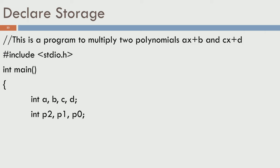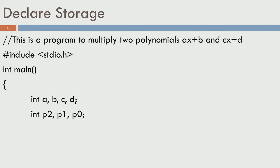I already have a small program written up here. We start with declaration of storage — that is step 1. Ignore the first few lines; you can see there is 'int a, b, c, d' and 'int p2, p1, p0'. We need 4 coefficients and the product polynomial has only 3 coefficients: p2, p1, and p0 are the names I am giving them.